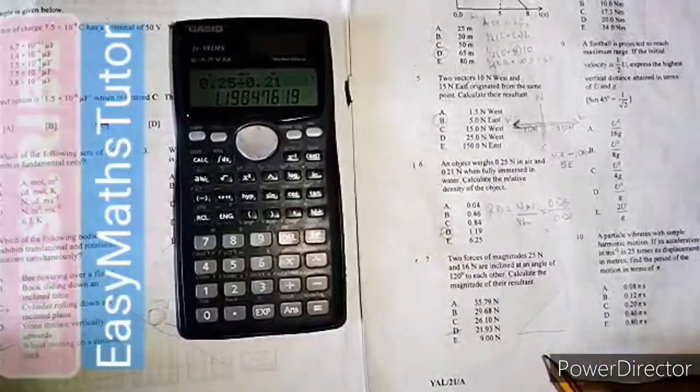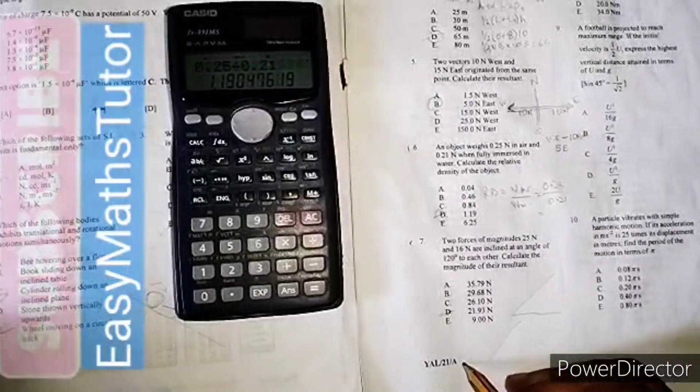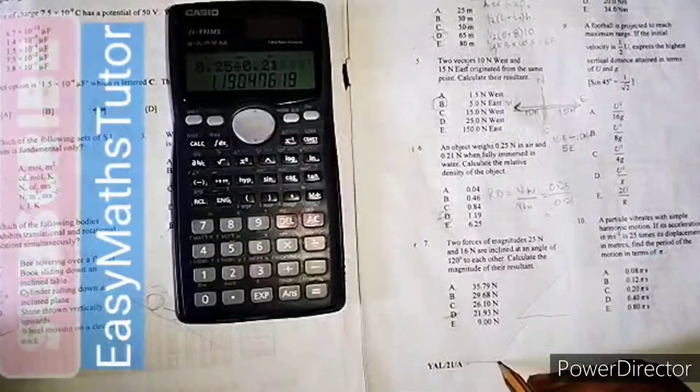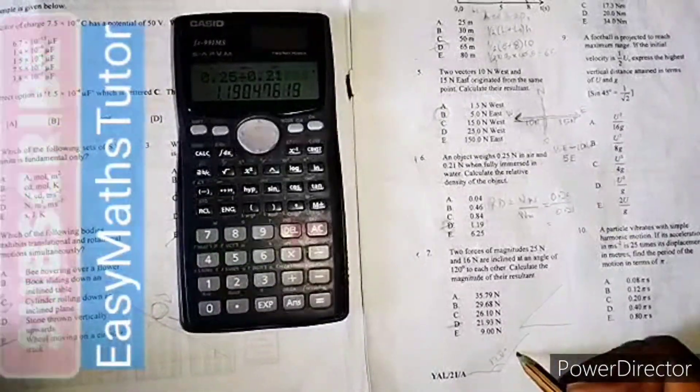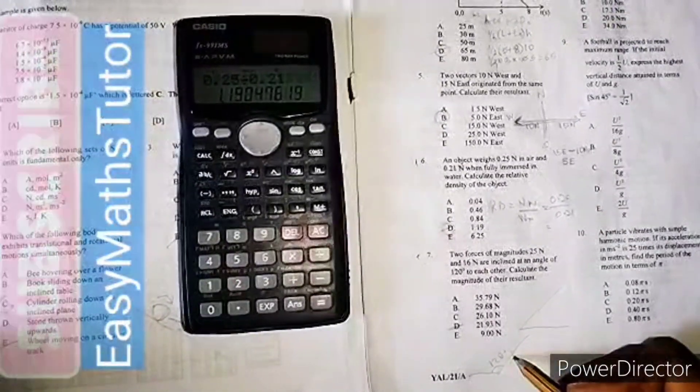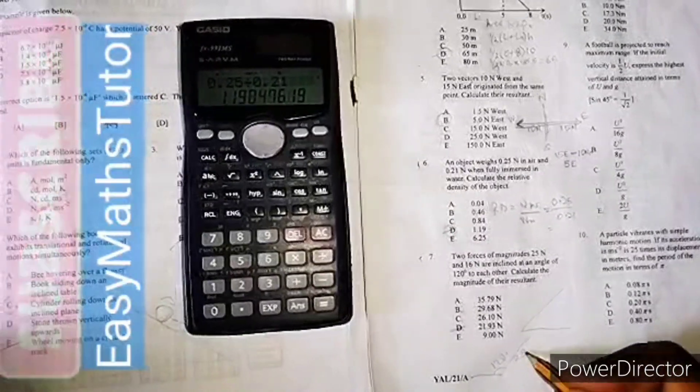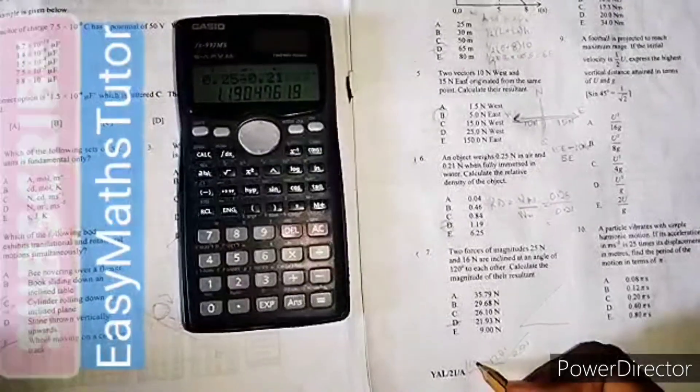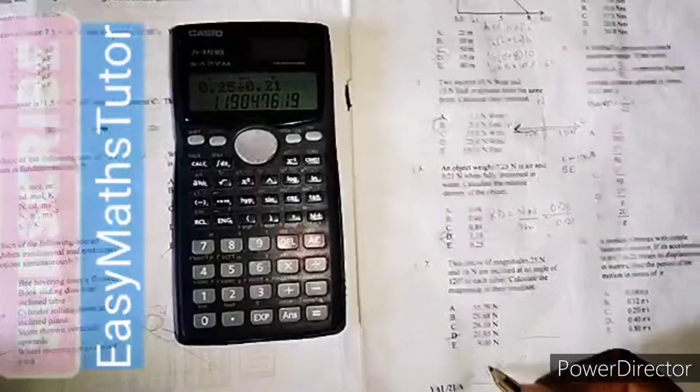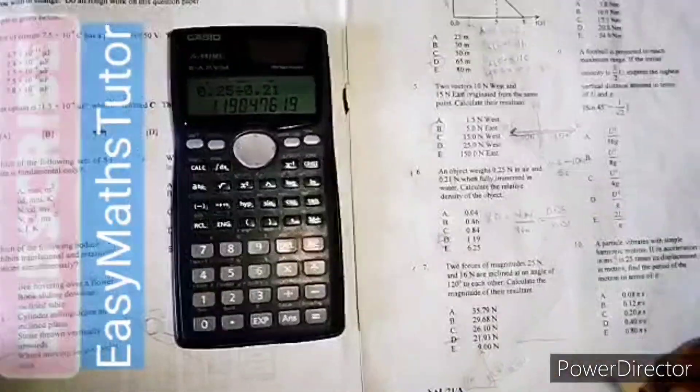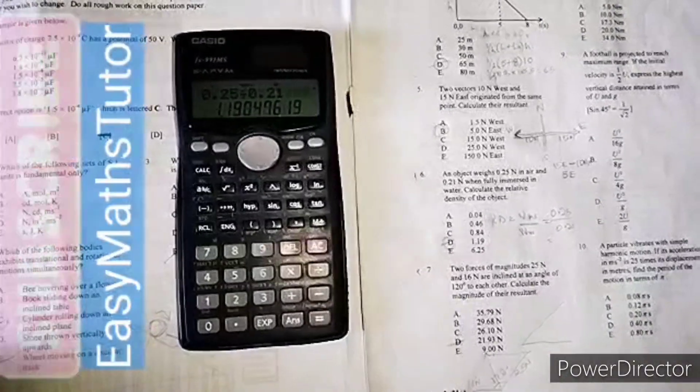It's inclined, so it's going to be something like this. This is 120 degrees. One angle is inclined at 25 newton while the other is at 16 newton. For the resultant force, I'm going to use the parallelogram law of vectors.